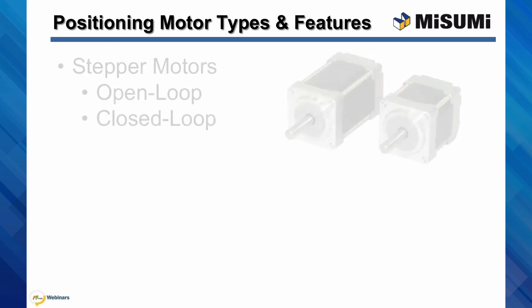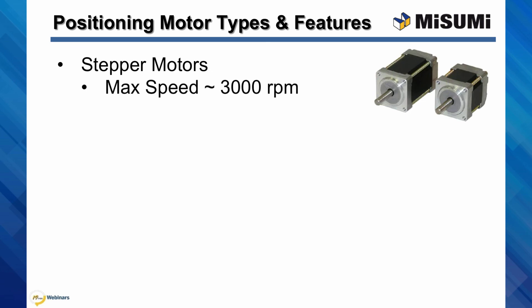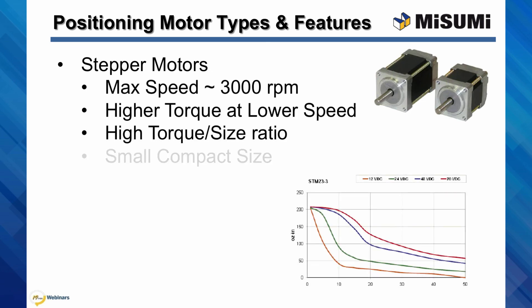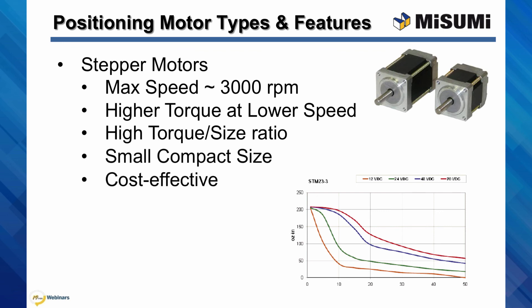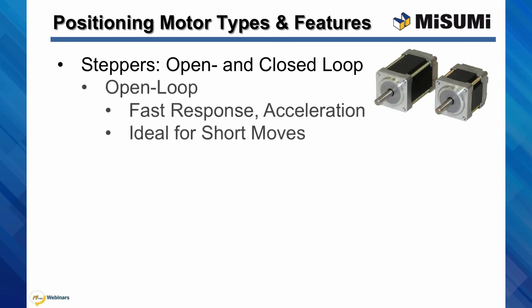The last topic of this webinar will cover stepper motors, both open and closed loop, and servo motors. These are the most common electric motors used for precision positioning, and are often the driving motors chosen for our LX precision positioning actuators. Stepper motors are widely used in a variety of positioning systems because of their small, compact size, low cost, and high torque output for the small size. Typical stepper motors can reach a maximum speed of up to 3,000 RPM and produce a much higher torque at lower speeds, with a holding torque when stationary to help maintain position when power is supplied. Typical stepper motors are usually open loop, with the internal structure of the motor allowing for the positioning functionality — ideal for quick short moves, providing fast response and rapid acceleration.